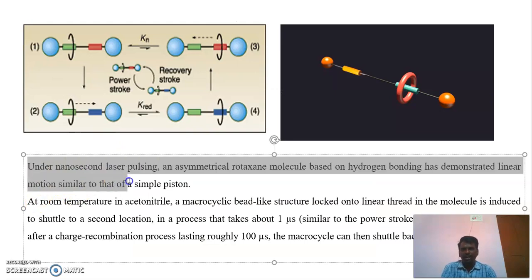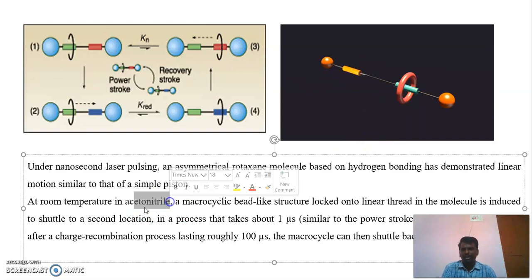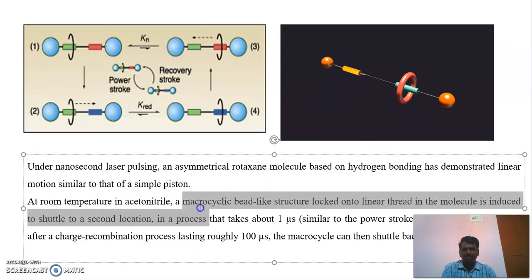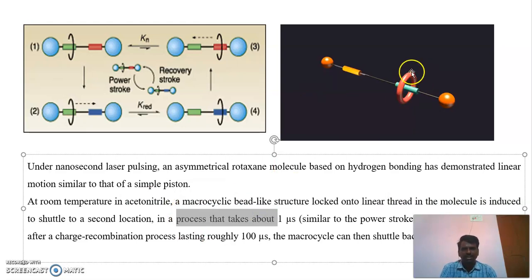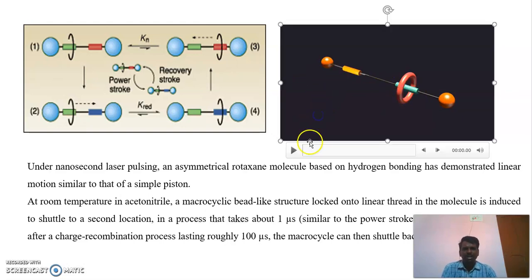Under nanosecond laser pulsing, asymmetrical rotaxane molecules based on hydrogen bonding have demonstrated linear motion. At room temperature in acetonitrile as a solvent, these macrocyclic bead-like structures are interlocked between two dumbbells and perform linear motion in the presence of laser light. If you stop the laser light, the movement stops.